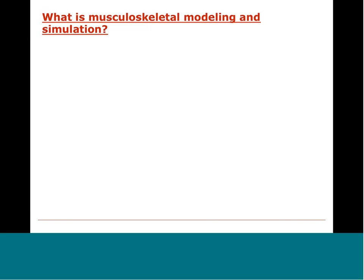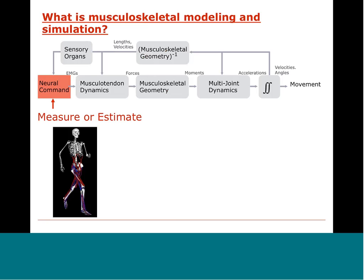Before we dive in, let's review exactly what we mean by musculoskeletal modeling and simulation. First, it can mean a forward dynamic simulation of movement. In forward simulation, we start with an estimate of neural command from EMG or a controller and integrate forward in time to arrive at an estimated motion. We can include models of musculoskeletal dynamics — taking us from EMG or excitation to a muscle force — and a model of musculoskeletal geometry to take us from muscle forces to joint moments. A model and simulation framework can be any part or variation of this flowchart.